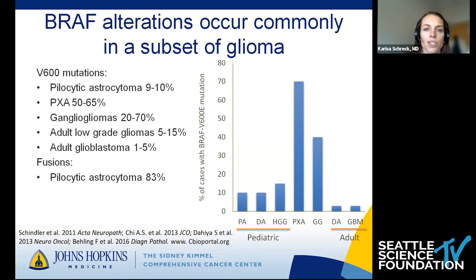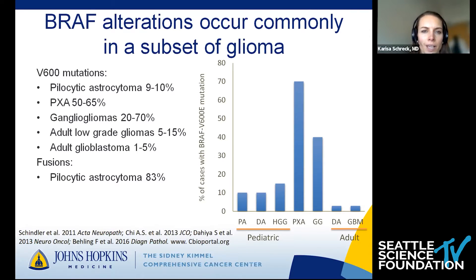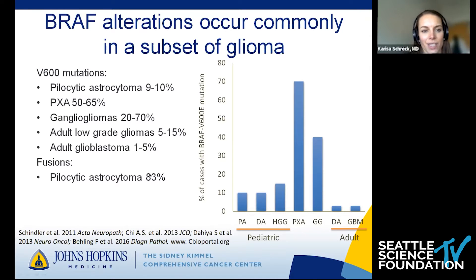BRAF alterations do occur commonly in a subset of glioma. The V600 mutation, the one we think of most commonly as being targetable, is common in PXA and in ganglioglioma, but it also occurs in a small but consistent subset of pediatric and adult astrocytoma. One of the other BRAF alterations is fusions, which are also very common in pilocytic astrocytoma. Putting the numbers together, almost all pilocytic astrocytomas have some alteration in BRAF.